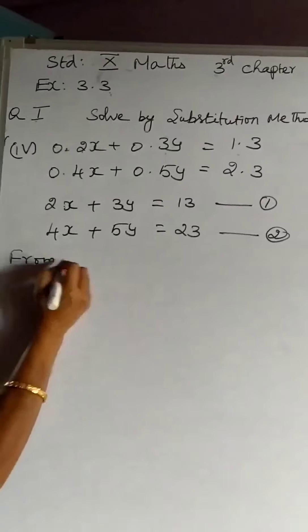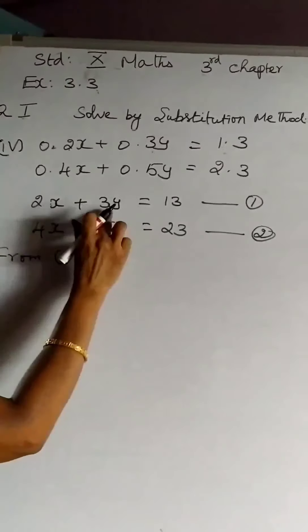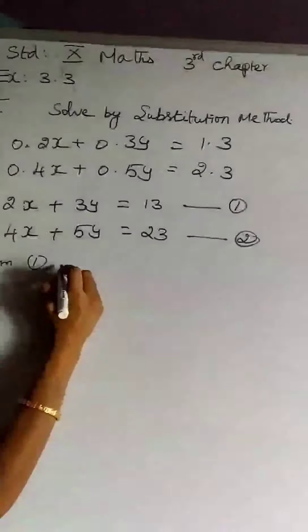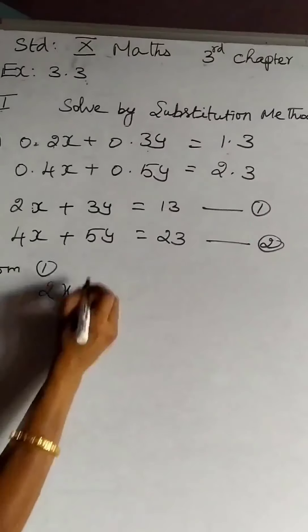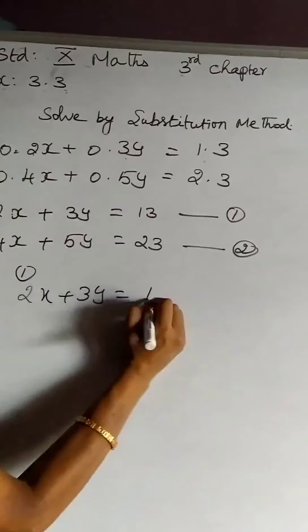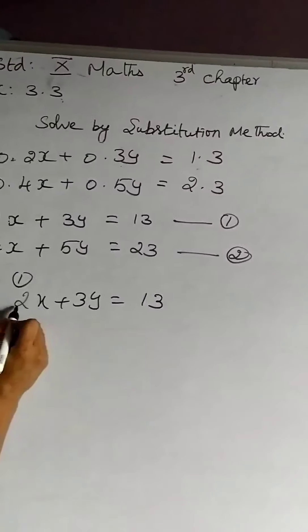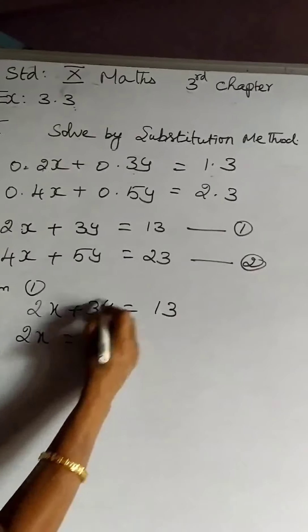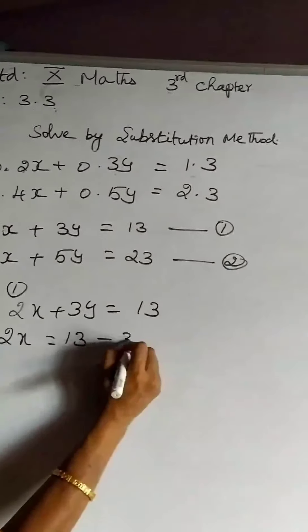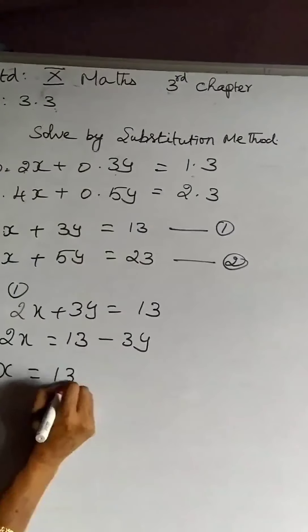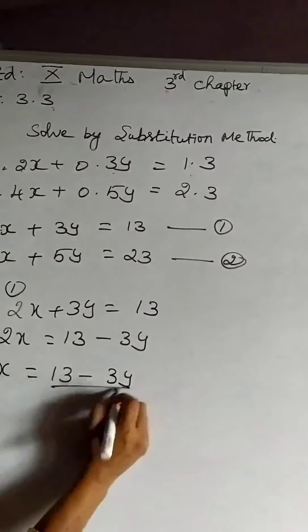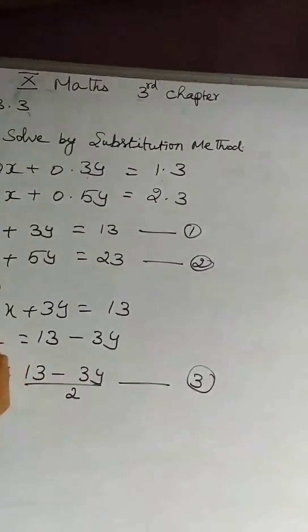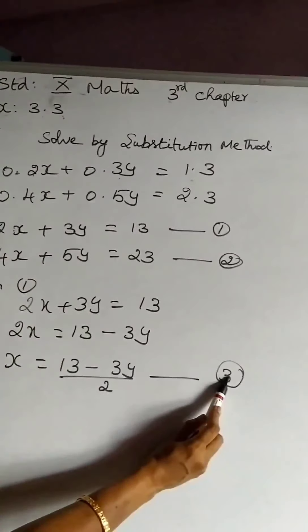From the first equation I am going to find the x-form or y-form, similar to what we did in the graph question. Copying the first equation: 2x + 3y = 13. Here finding the x-form is easier, so I find the x-form. Taking y to the other side as minus 3y, we get x = (13 − 3y) / 2. Let us name this as the third equation, formed from the first equation.